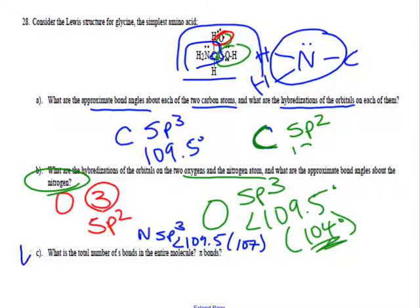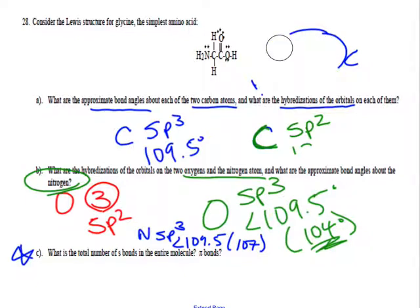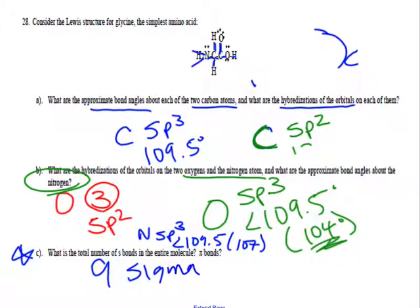The last thing to determine is the number of sigma and pi bonds. You don't need to draw the orbitals — just count single, double, and triple bonds. Counting the single bonds: one, two, three, four, five, six, seven, eight — eight sigmas. The double bond contributes one more sigma, giving nine sigma bonds total. Because there's one double bond, there is also one pi bond. So this molecule has nine sigma bonds and one pi bond.